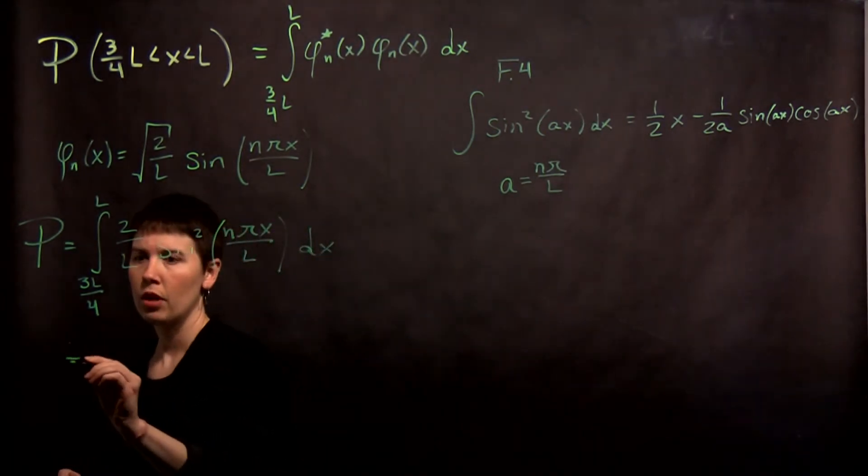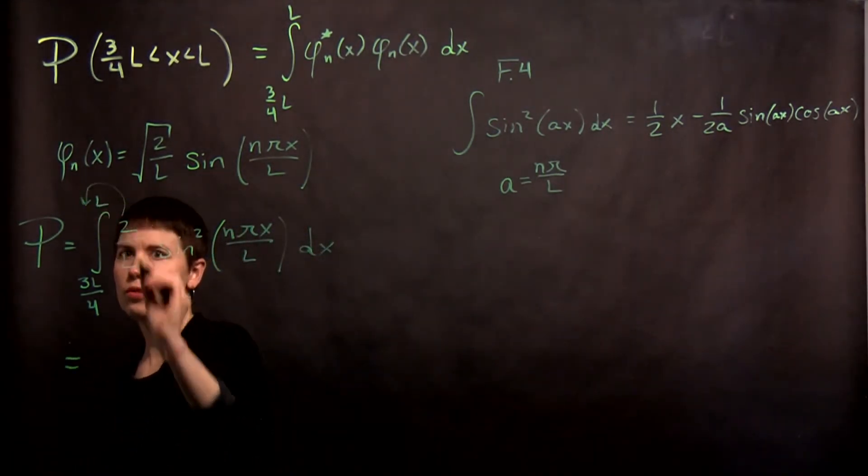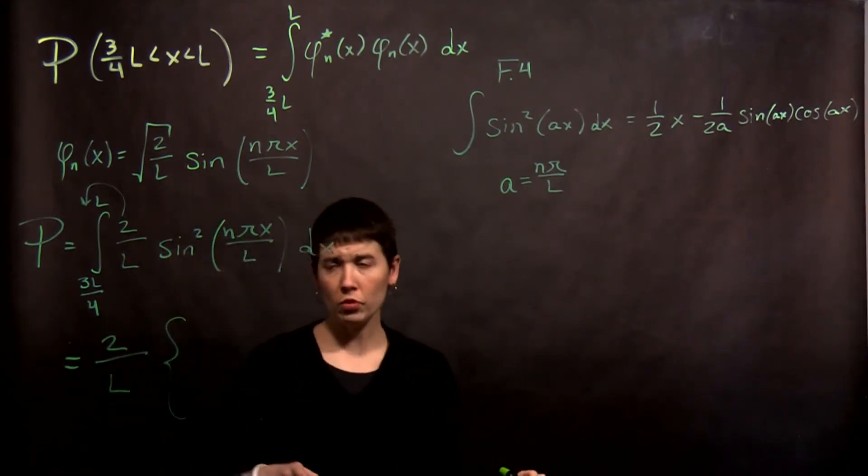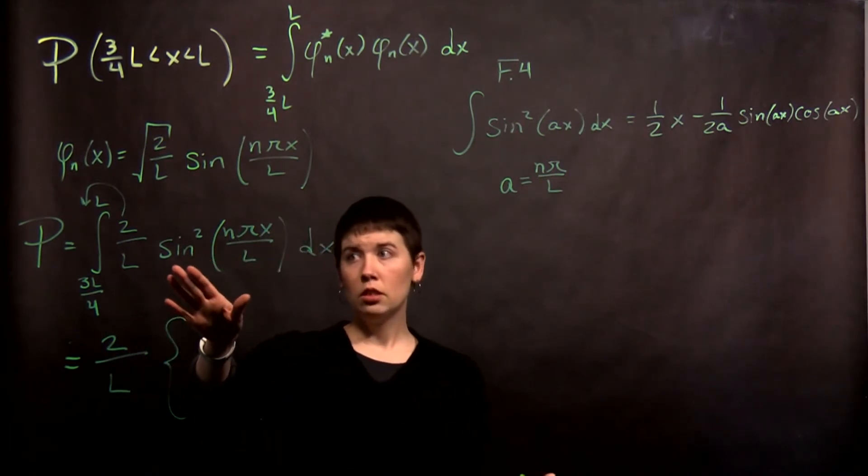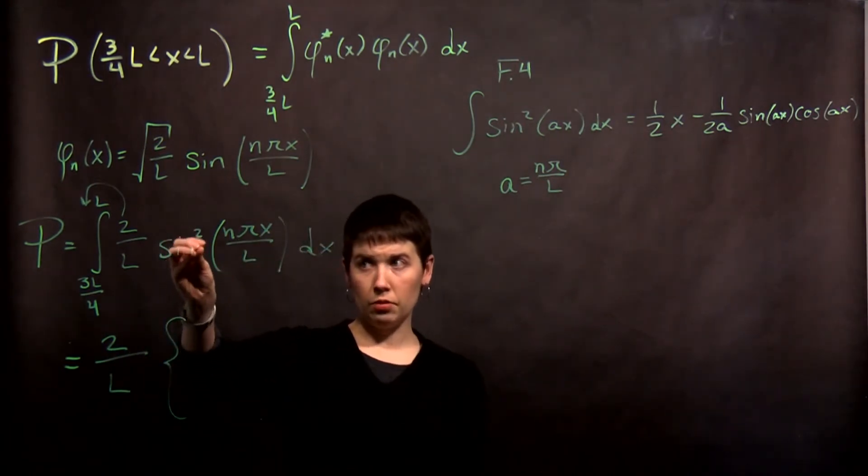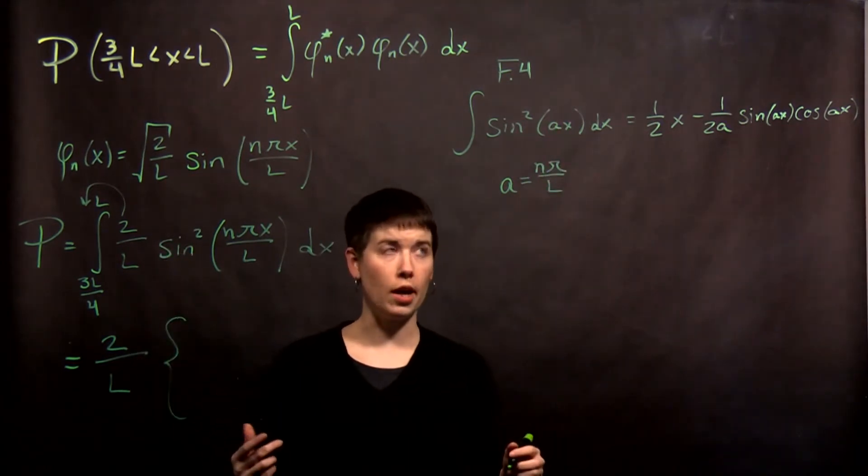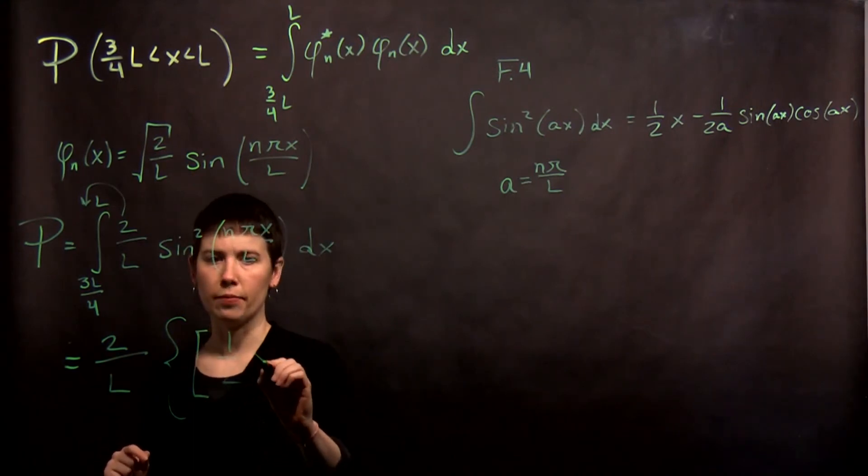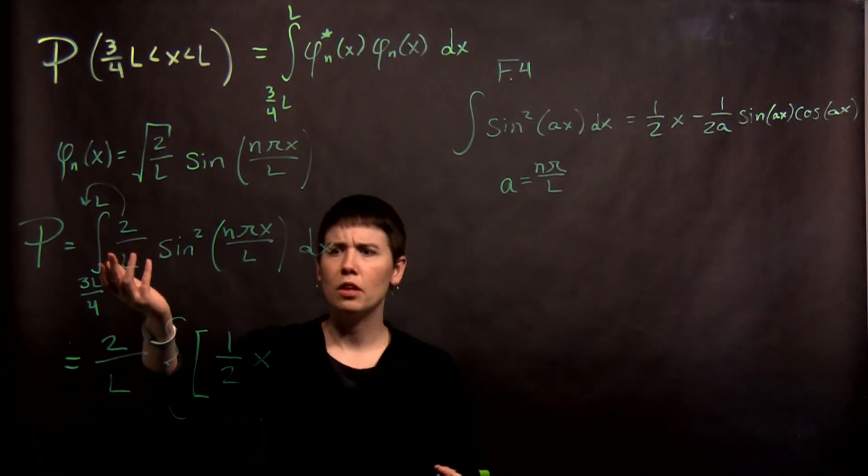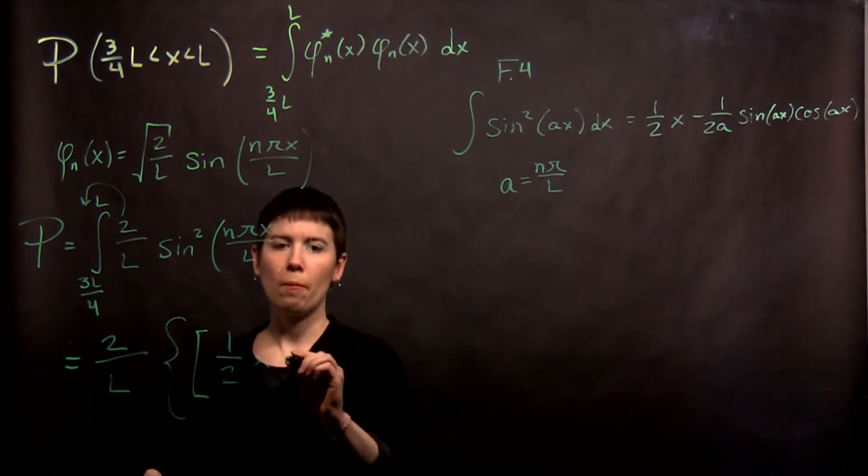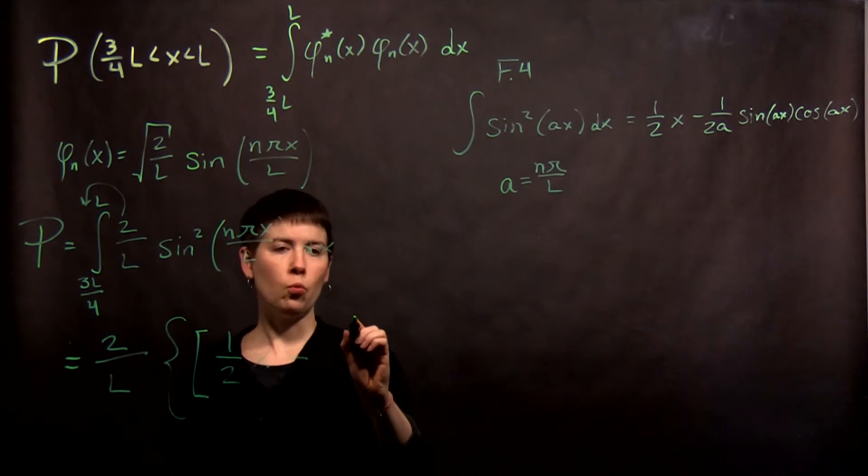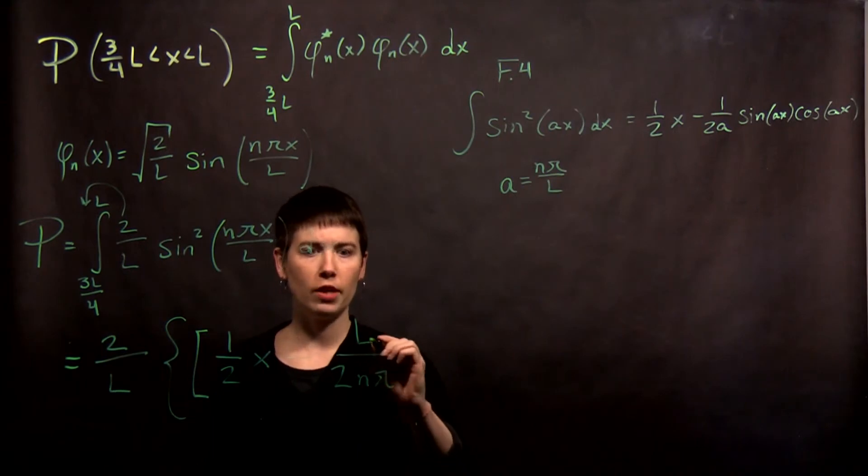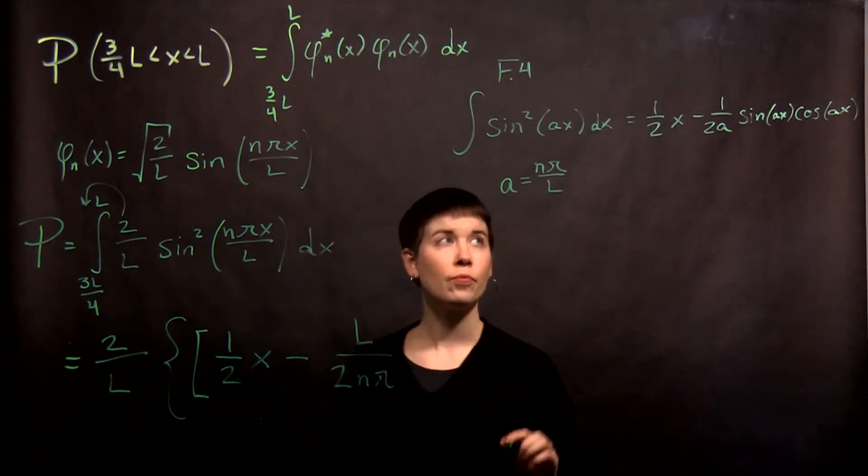So I'm going to come back now. Notice that I can pull this 2 over l outside. And I'm now going to be very careful with my brackets. So what I actually have here is the integral of sine squared of ax. Okay. So the first thing I have is 1 half x. Fine. What is x? Well, we're going to plug in our bounds. It's fine. And then minus 1 over 2a. So 1 over 2, but now notice that a is n pi over l. Okay. So n pi over l. And then,